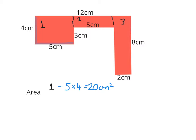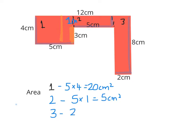Let's now look at area two. We know one side is 5 centimeters and we need to calculate the smaller dimension. We know this length is 3 centimeters but the entire thing is 4, so that missing number is 1 centimeter. The area for section two is 5 centimeters multiplied by 1 centimeter, giving 5 centimeters squared. For the third section we have a 2 centimeter by 8 centimeter rectangle, so area three is 2 times 8.